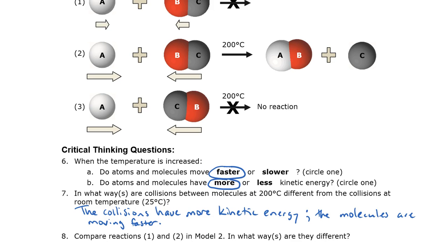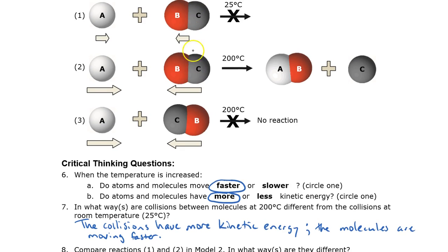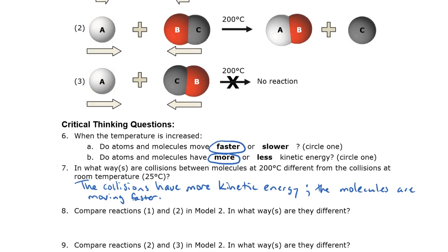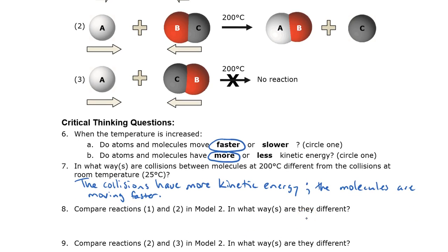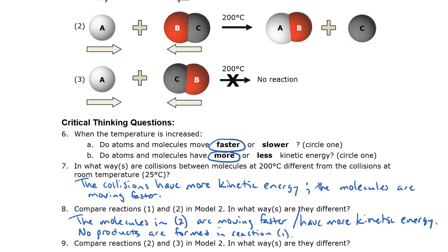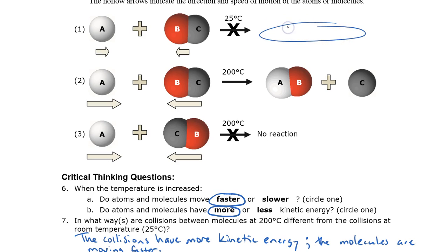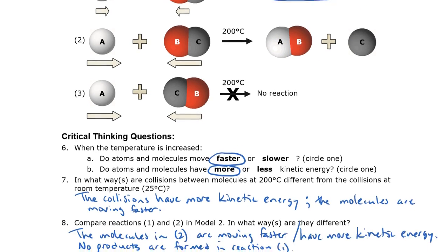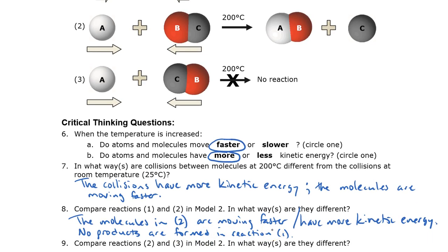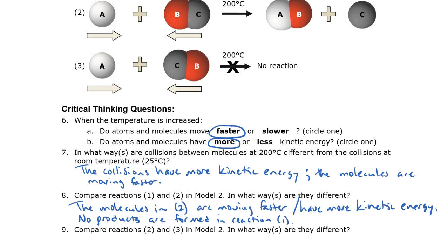Question 8 asks you to compare reactions 1 and 2 — those two at the top of the model — and list the ways they are different. I listed a couple of ways. I said the molecules in reaction 2 are moving faster and have more kinetic energy. Another thing you might have noticed is that no products are formed in reaction 1, whereas products are formed in reaction 2. That's a difference.